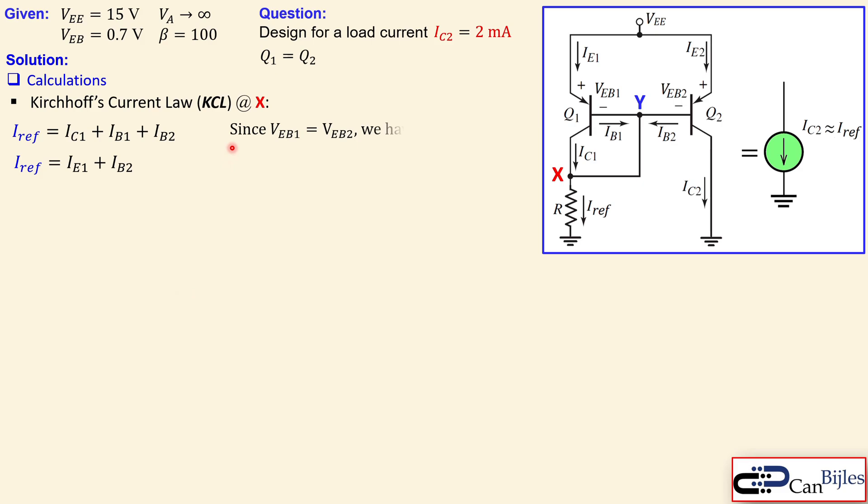We know that since the VEB emitter base voltage of both transistors are exact same, we have the collector current of the Q1 is equal to the collector current of the Q2, which is also the same for the base current. It's also the same for the emitter current. So that's an interesting observation.